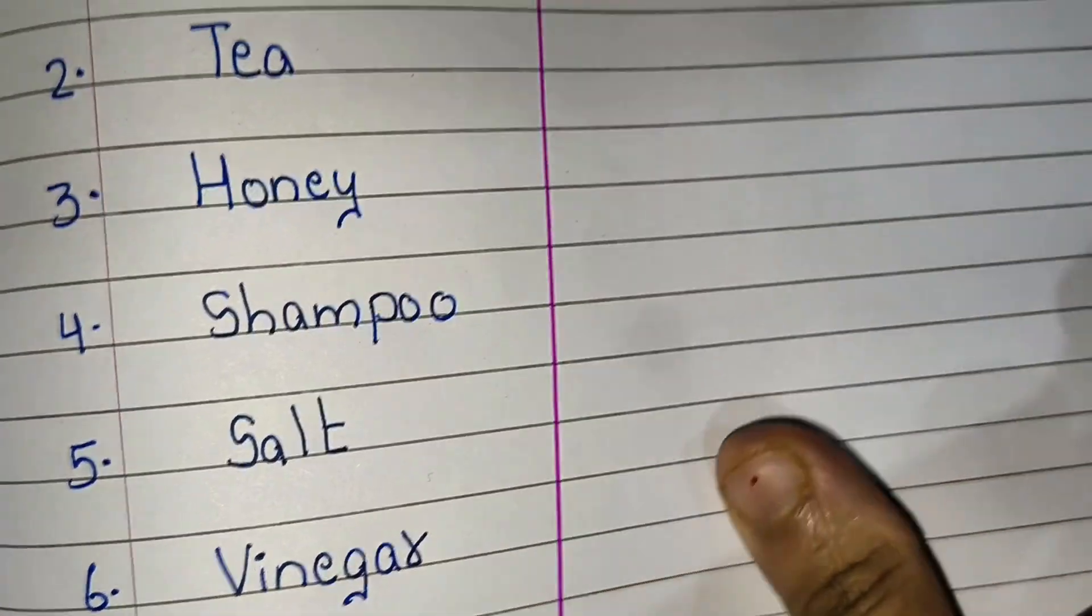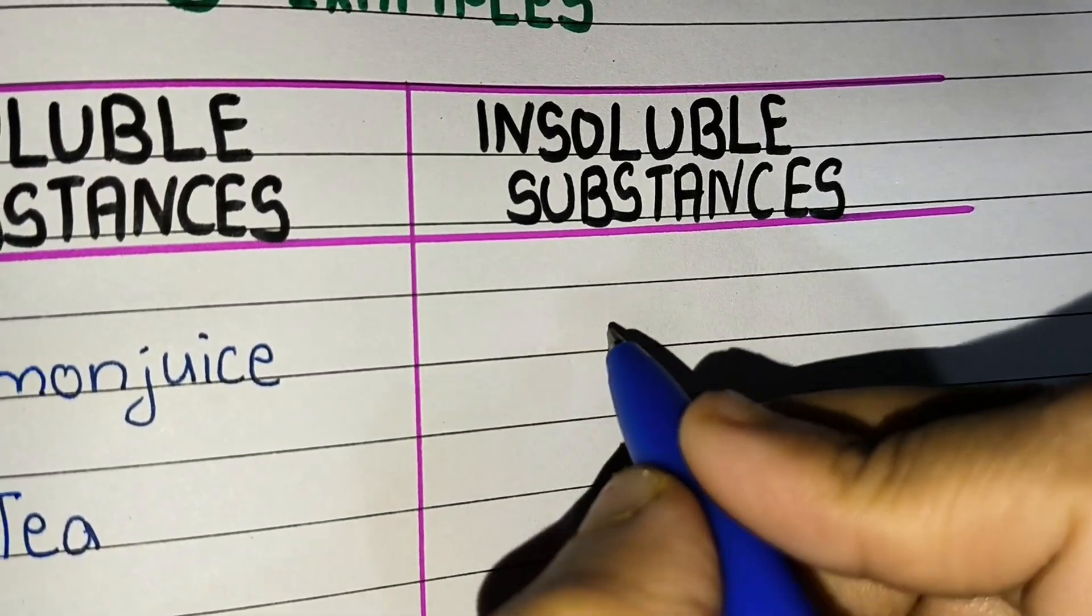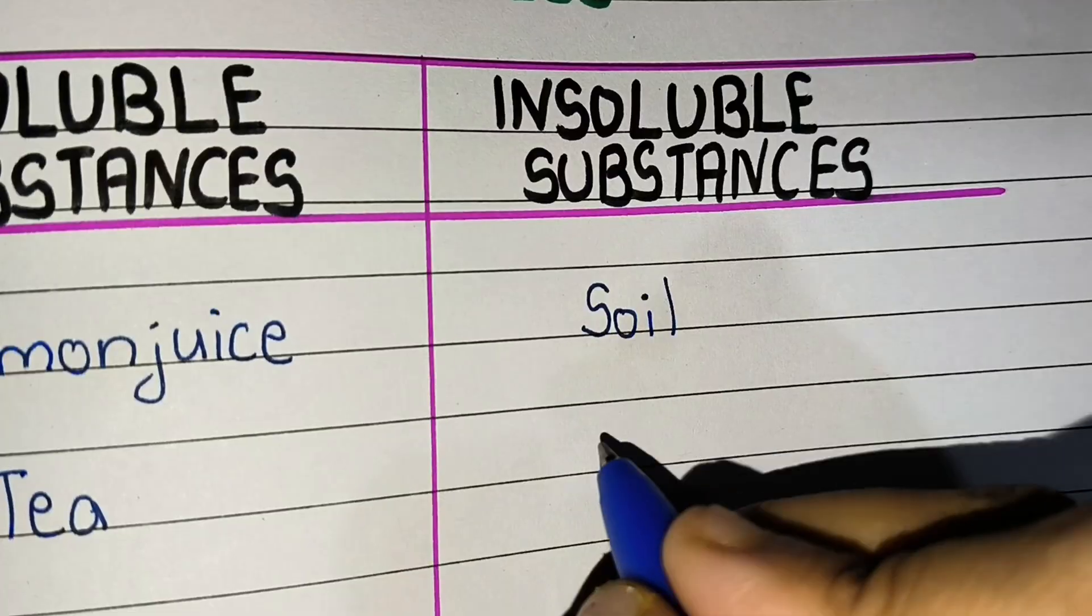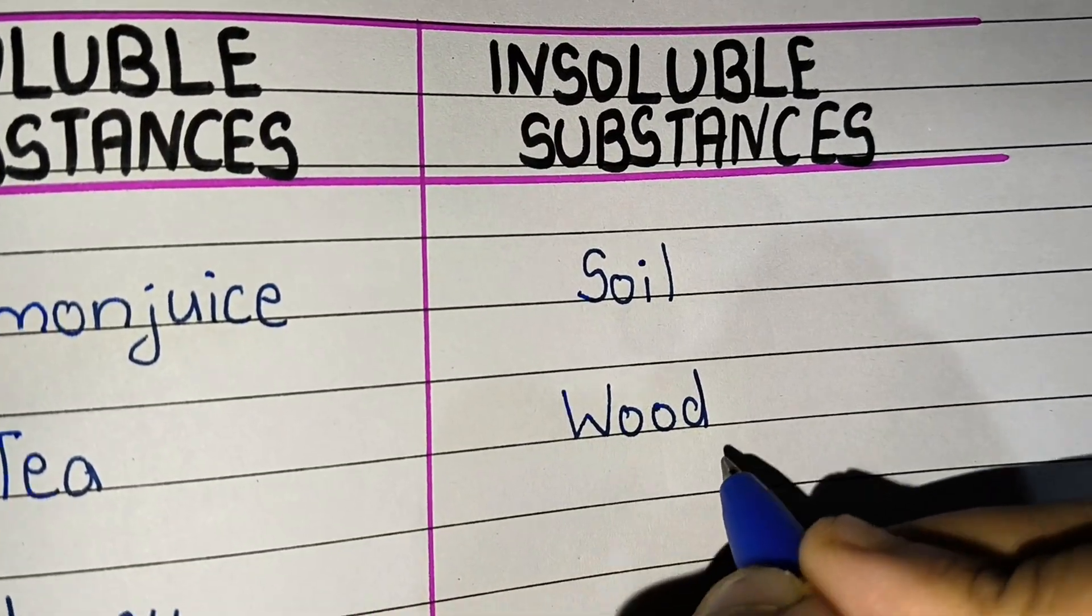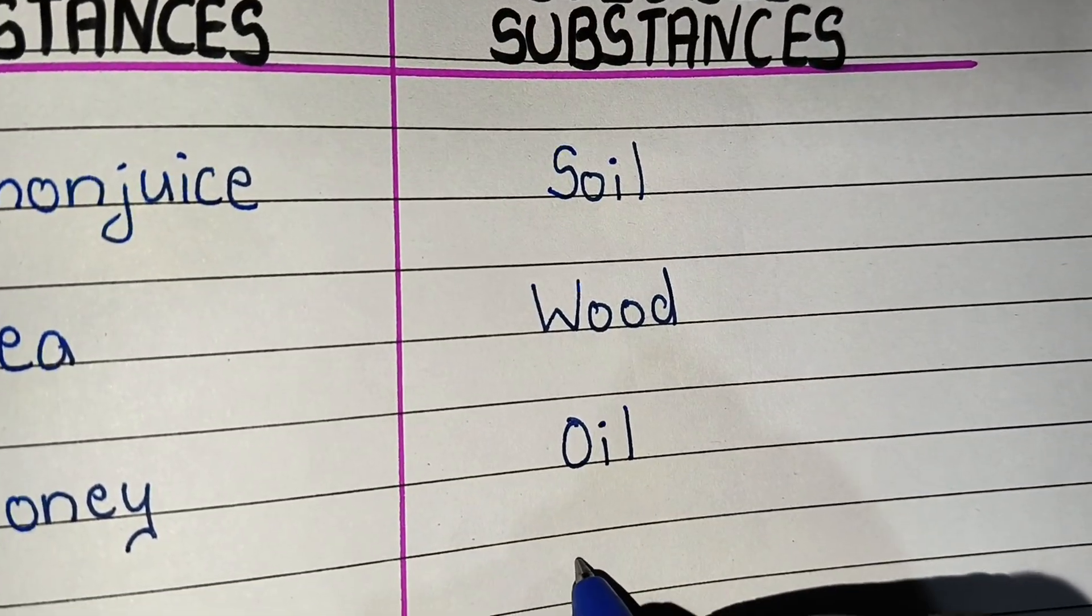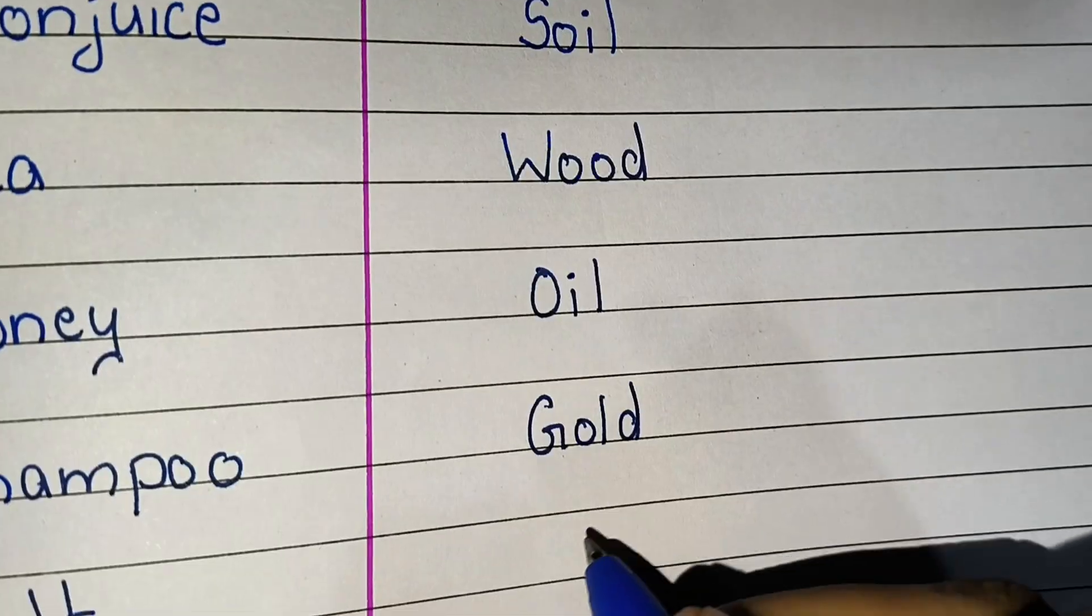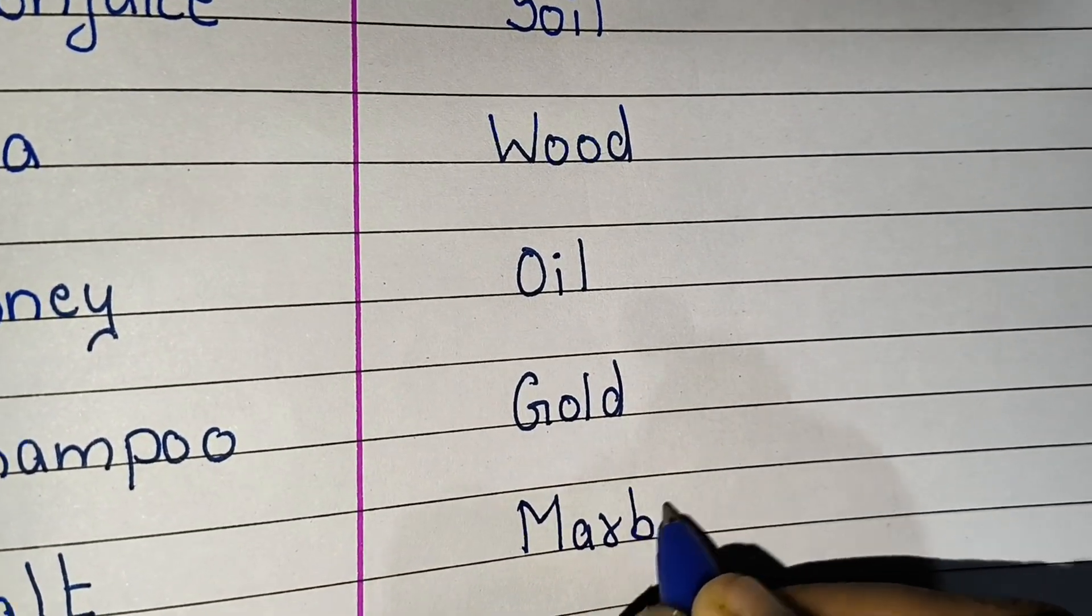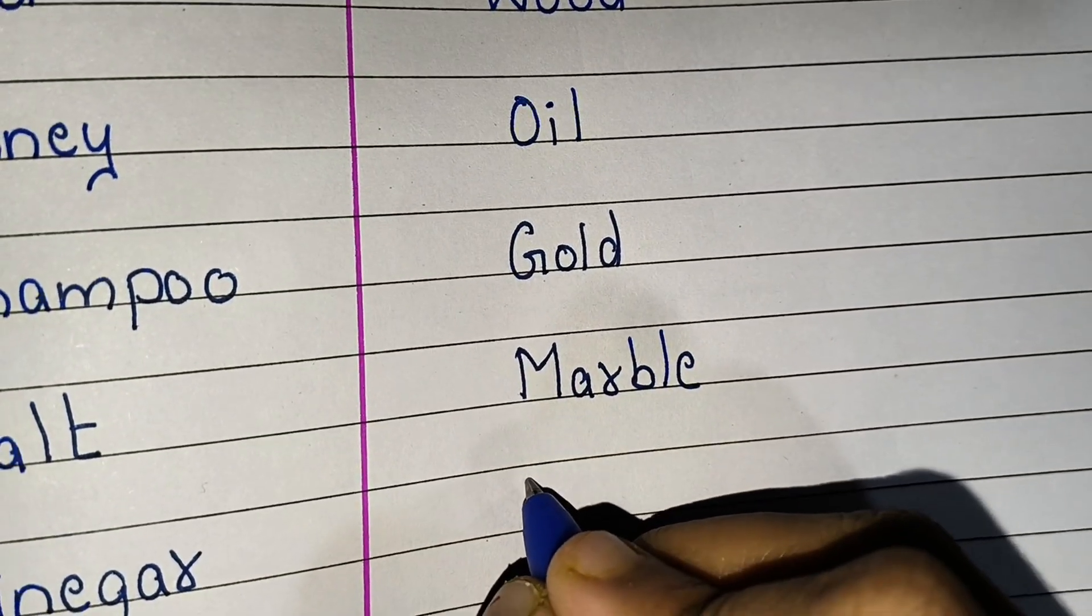Insoluble substances which do not dissolve in water. Examples: soil, wood (mati lakri), oil (tel) which do not dissolve in water, gold which does not mix, marble, and plastic.